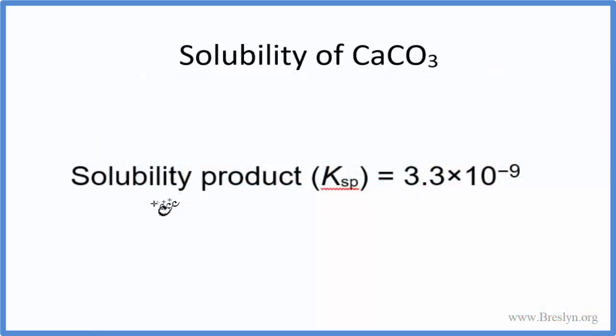One last note, we could look at the solubility product for calcium carbonate, the KSP, because most things dissolve a little bit. Even if they're insoluble, they'll dissolve a little bit. The KSP gives us an idea of that. For calcium carbonate, that's 3.3 times 10 to the minus ninth, a pretty small number. So while some calcium carbonate will dissolve in water, it's such a small amount that we don't really consider it. We consider this to be insoluble.